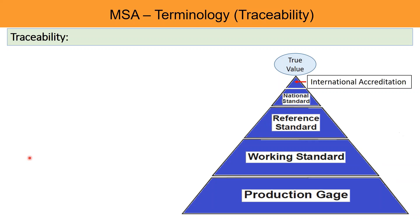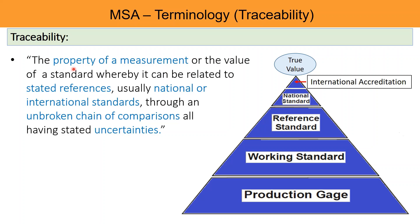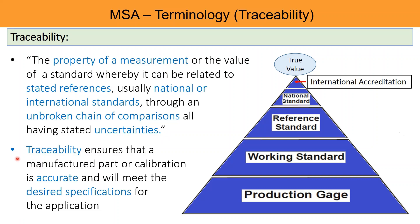Traceability is the property of a measurement or the value of a standard whereby it can be related to stated references — usually national or international standards — through an unbroken chain of comparisons, all having stated uncertainties. The purpose of traceability is to keep track of and record the history. Traceability ensures that a manufactured part or calibration is accurate and will meet the desired specifications for the application.